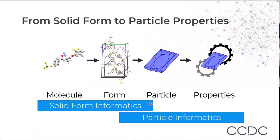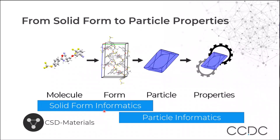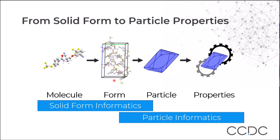Where particle informatics sits in our workflows comes just after solid form informatics. Many of you will be very familiar with solid form informatics — these are the tools in the CSD Materials menu in Mercury. They've been covered in various workshops and CSDU modules, and they allow us to use the information in the CSD to think about molecules, the diversity of solid forms we can have, and the stability of those different solid forms.